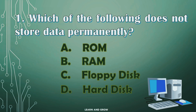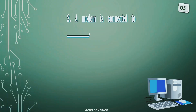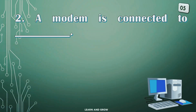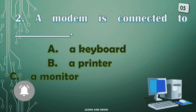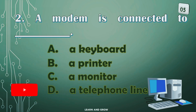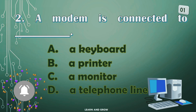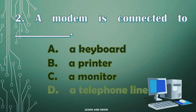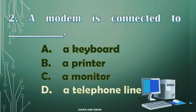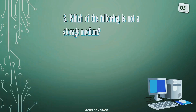The right answer is Option B: RAM. A modem is connected to — options are: A: Keyboard, B: Printer, C: Monitor, or D: Telephone Line.